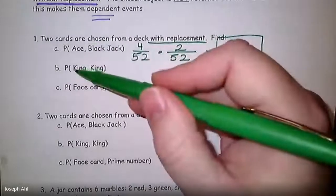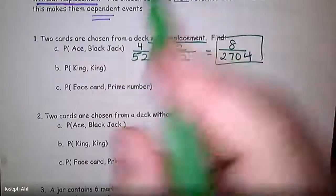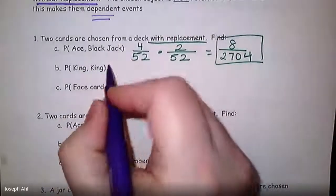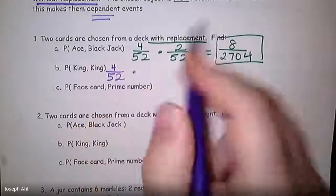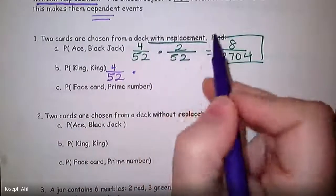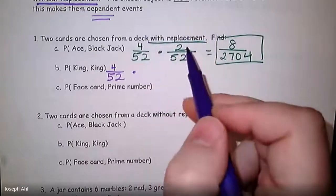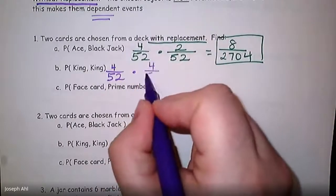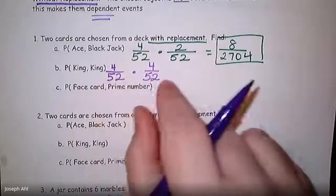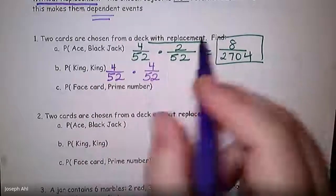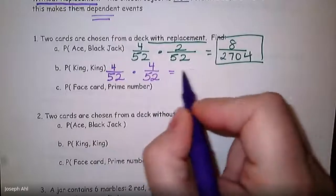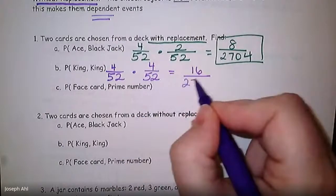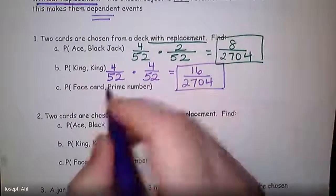Probability of picking a king and then a king, with replacement: first reach in for a king — four out of 52. With replacement, I put that king back, so the second time I pick a king it's still four out of 52. These events are independent. The final probability would be 16 on top — since 4 times 4 is 16 — and 52 times 52 is 2,704 on the bottom.